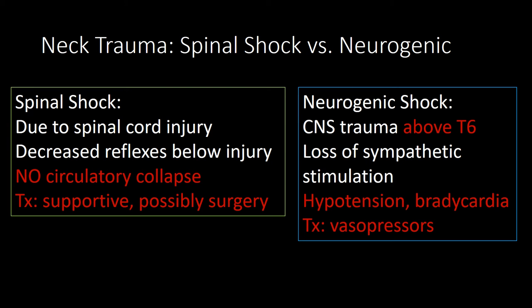Spinal shock occurs after spinal cord injury, usually a complete transection. Reflexes below the level of injury are decreased or lost, and there may be flaccid paralysis at all levels below the injury. There is no circulatory collapse, and treatment is supportive and potentially surgical depending on vertebral fractures.